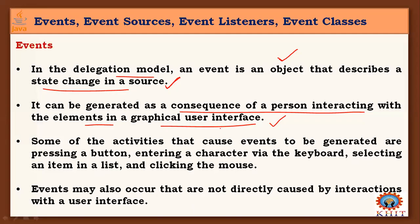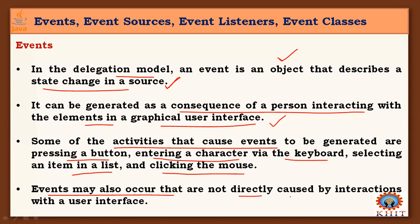Many types of events can be generated and a person can interact with those events by processing them using listeners. Some activities that cause events to be generated include: pressing a button in a graphical user interface application, entering a character via keyboard, selecting an item in a list, and clicking the mouse. These are all types of events handled through Java application programs. Some events may also occur that are not directly caused by interactions with the user interface.